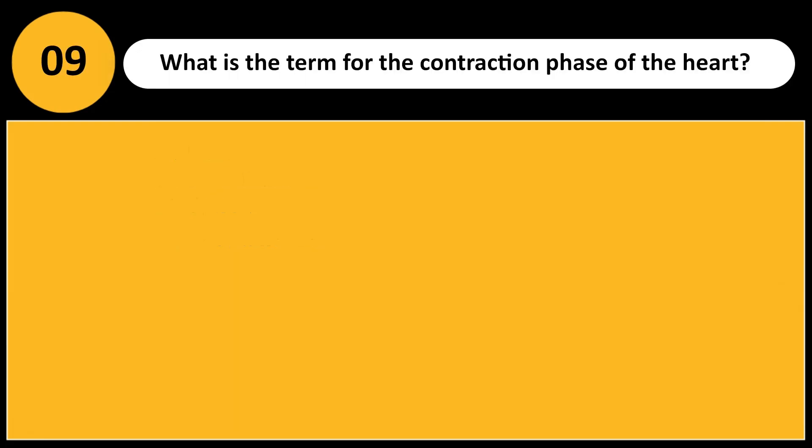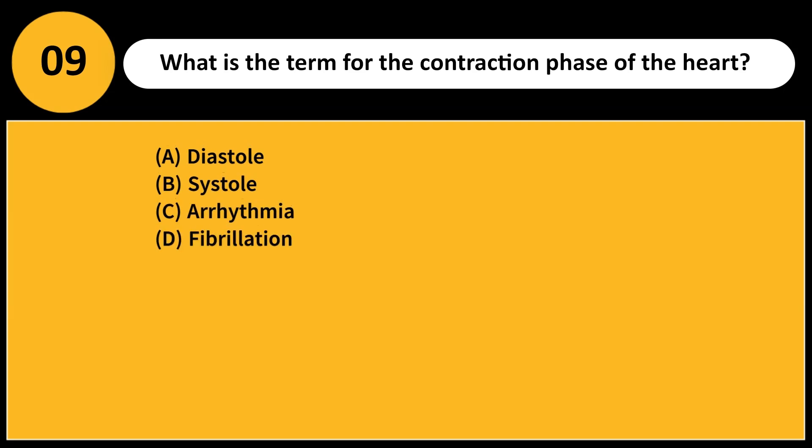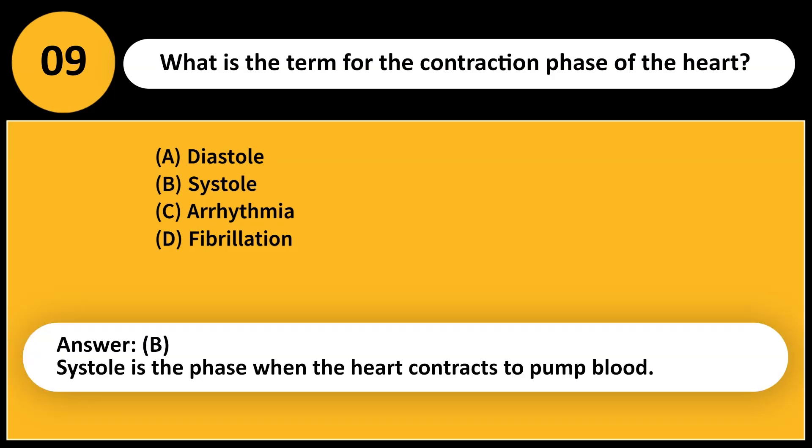What is the term for the contraction phase of the heart? A. Diastole. B. Systole. C. Arrhythmia. D. Fibrillation. Answer: B. Systole is the phase when the heart contracts to pump blood.